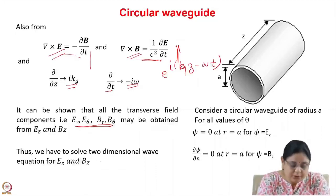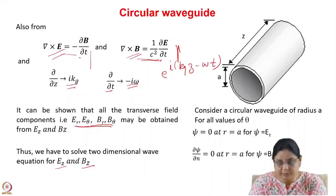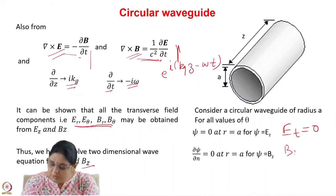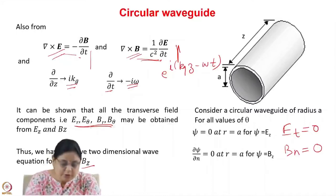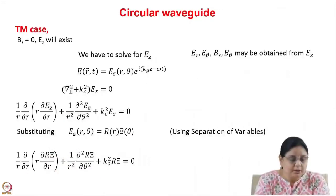We have to solve the two-dimensional wave equation only for Ez and Bz. The boundary conditions are that Ez equals 0 at r equal to a (tangential component of electric field is 0) and del psi by del n equals 0 for Bz at r equal to a (normal component of magnetic field is 0).